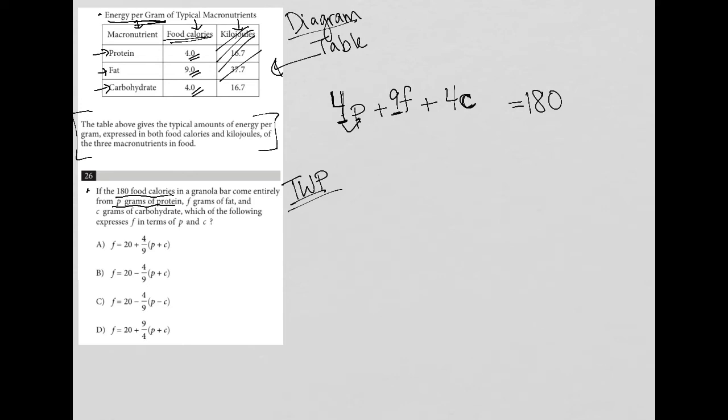there's nine food calories per gram of fat, four food calories per gram of carbohydrate. So all that added together is our 180.